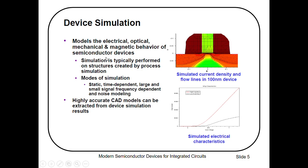Device simulations basically model the electrical, optical, mechanical, and magnetic behavior of semiconductor devices. Simulation is typically performed on structures created by process simulations. Here we have a simulated current density and flow lines in a 100 nanometer device. The modes of simulation of devices are static or time dependent, large and small signal frequency dependent, and noise modeling. These device simulations produce highly accurate CAD models that can be extracted from device simulation results.